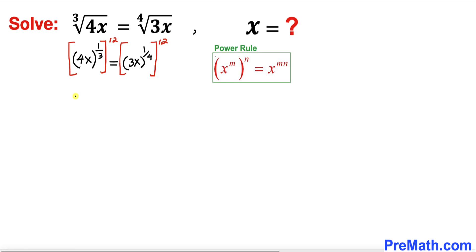So therefore on the left hand side this is going to become (4x)^4 equal to on the right hand side (3x)^3. And now we can see that 4^4 is simply 256, and likewise 3^3 is 27. So therefore our equation is going to become 256x^4 equals 27x^3.